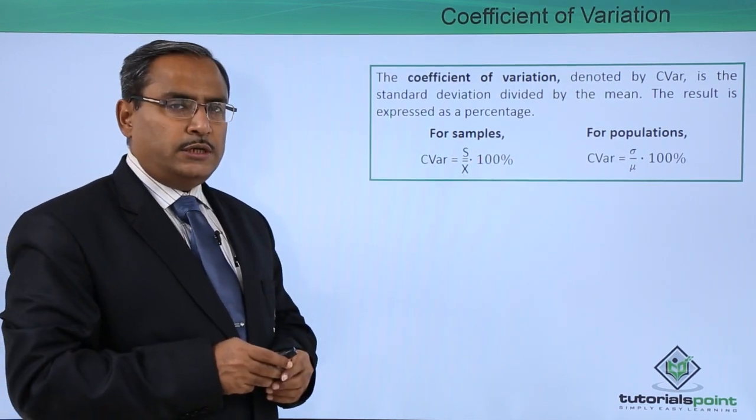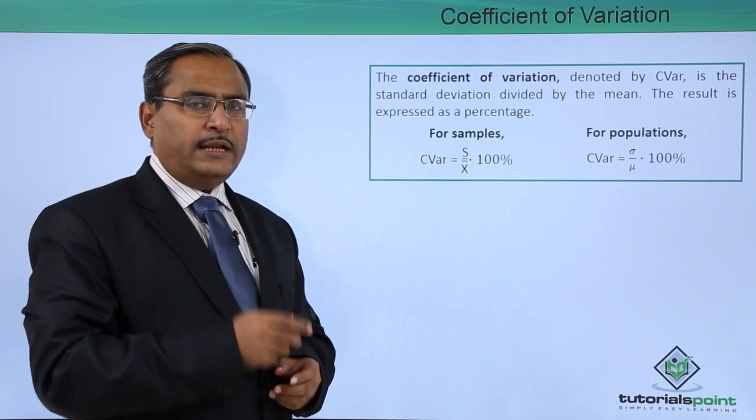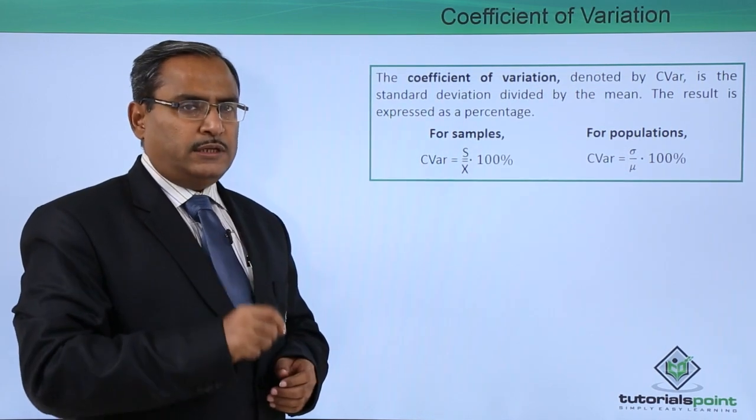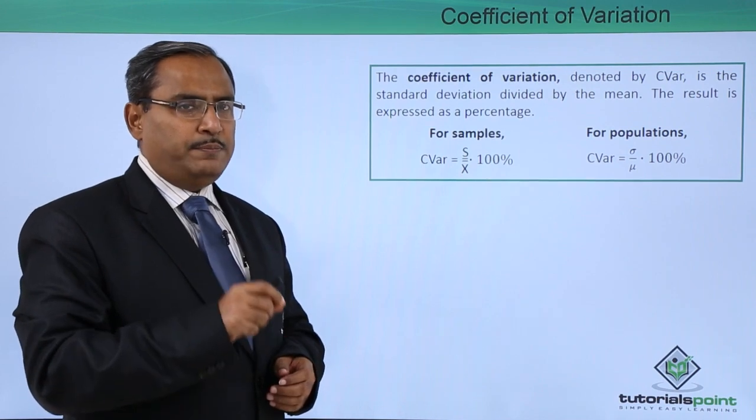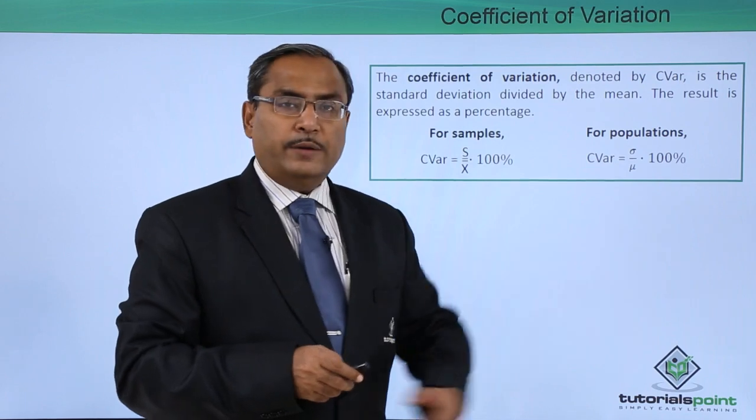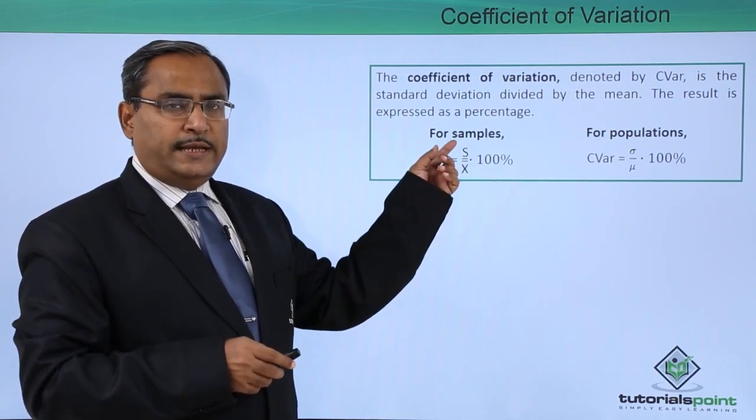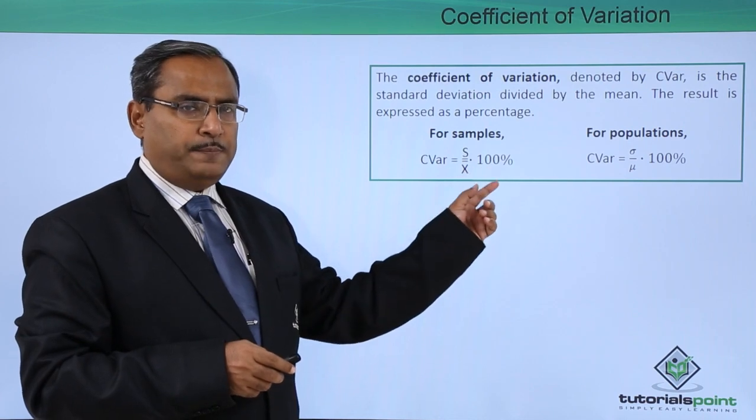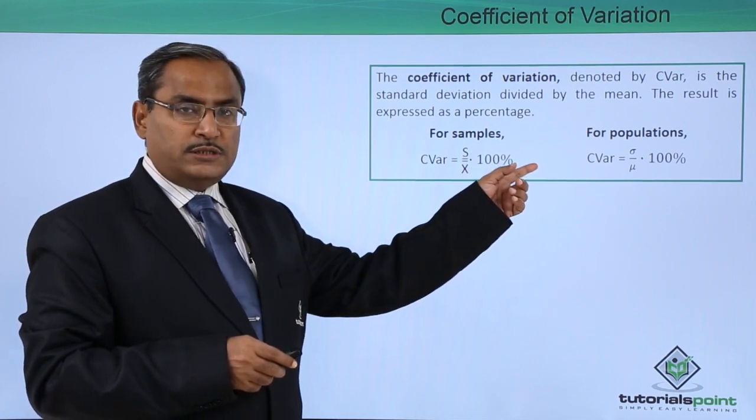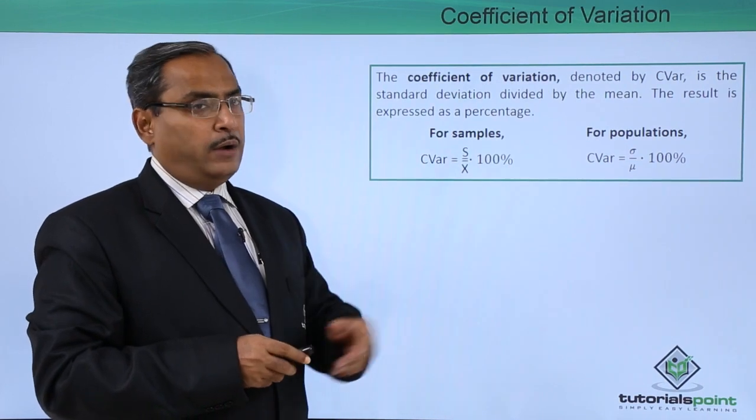But if we do the same calculation in case of population, then CV is equal to sigma, that is the symbol for the standard deviation for population, and mu, that is the mean for the population, times 100 percent. So, in this way we are getting CV as s by x̄ times 100 percent, and in case of population CV equals sigma by mu times 100 percent.